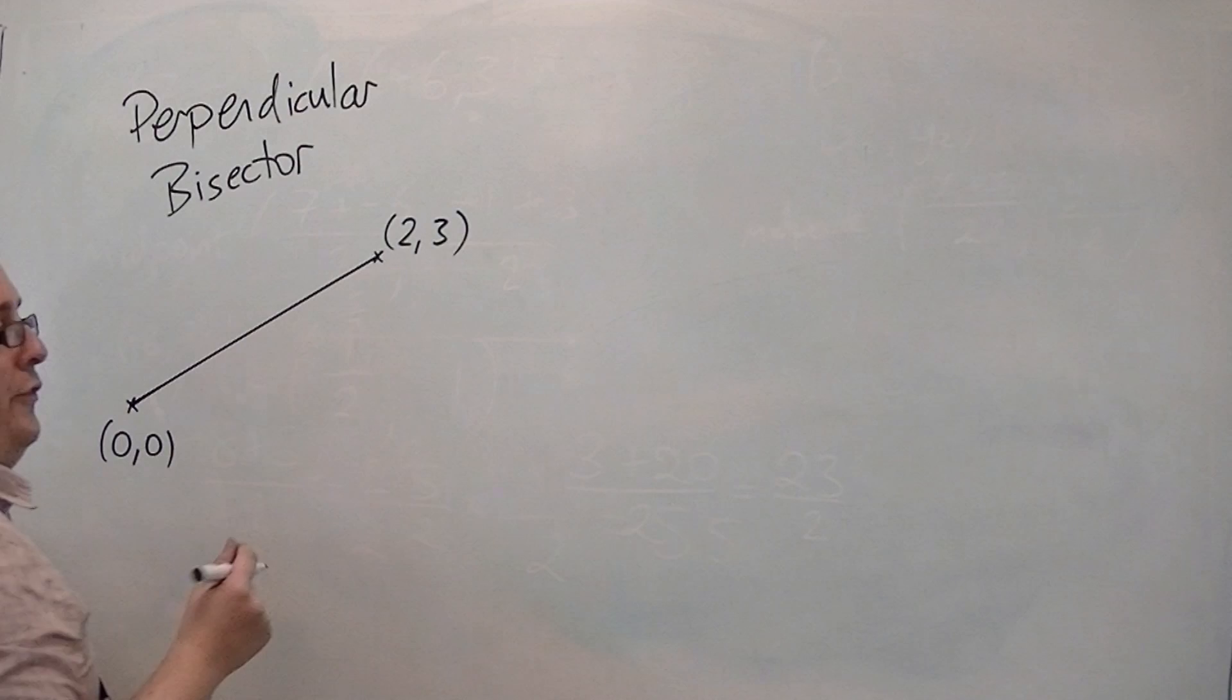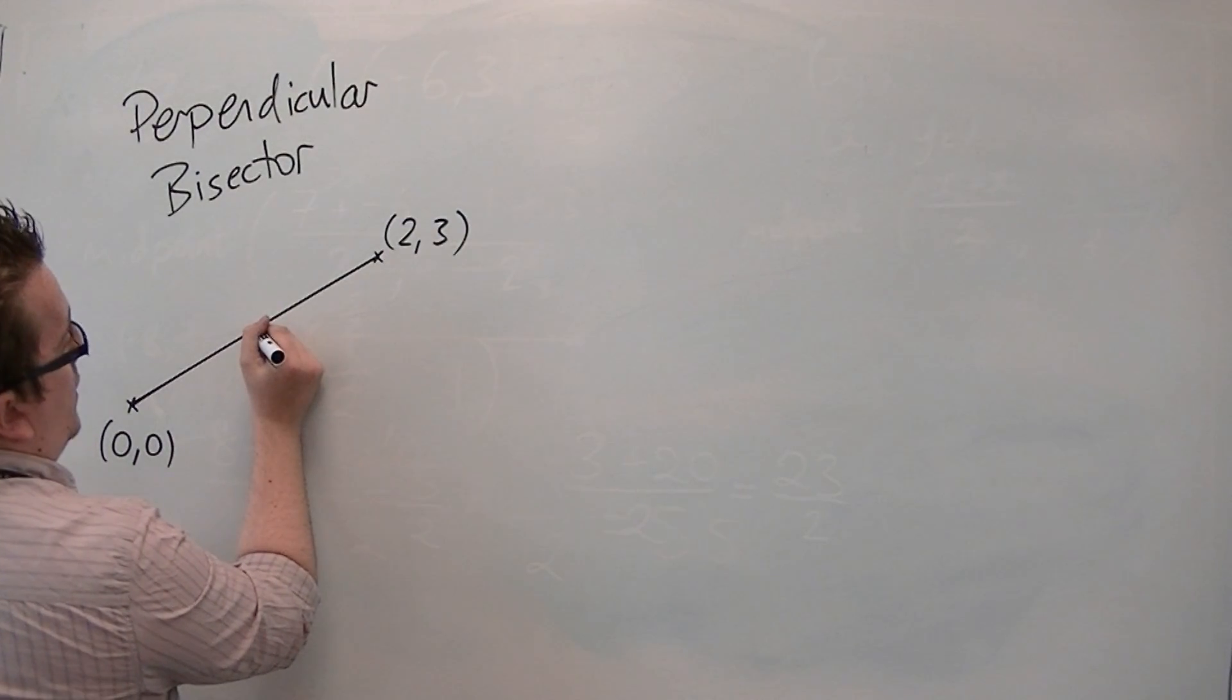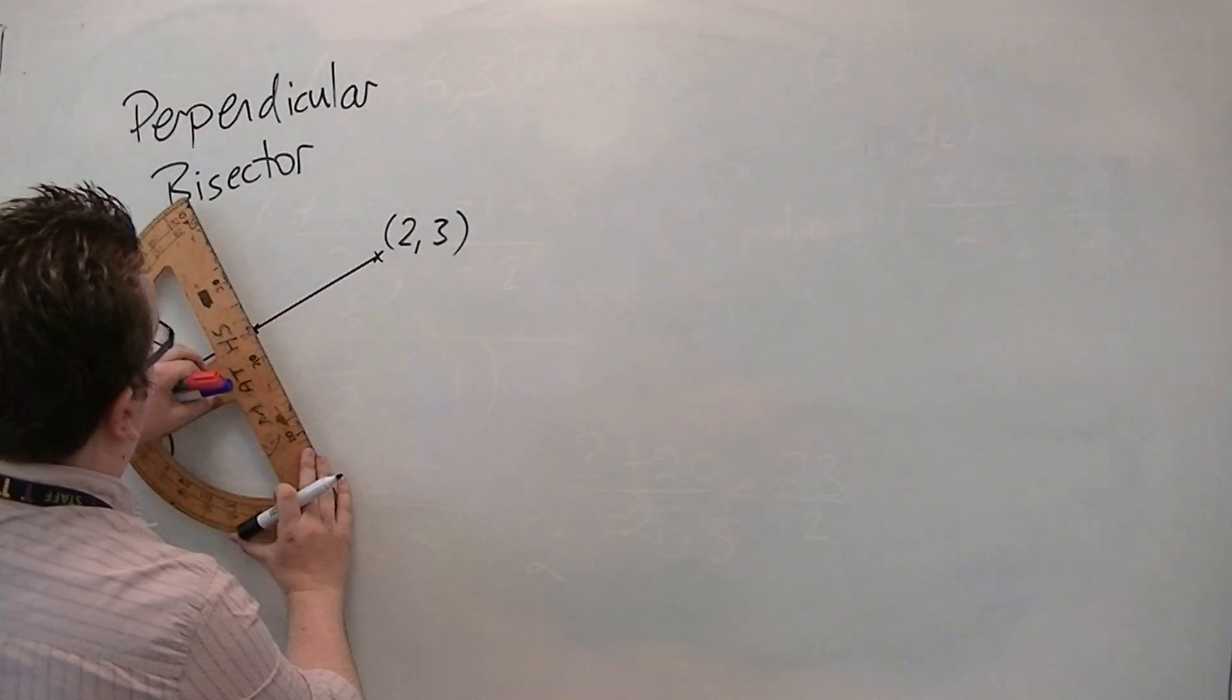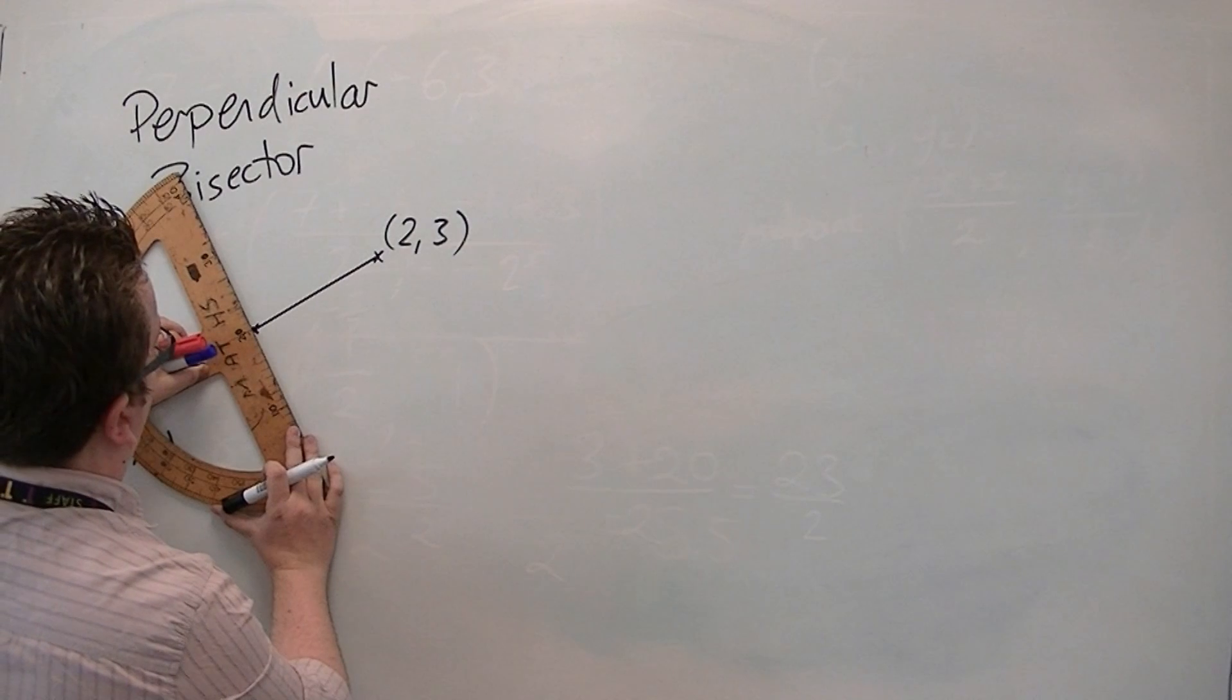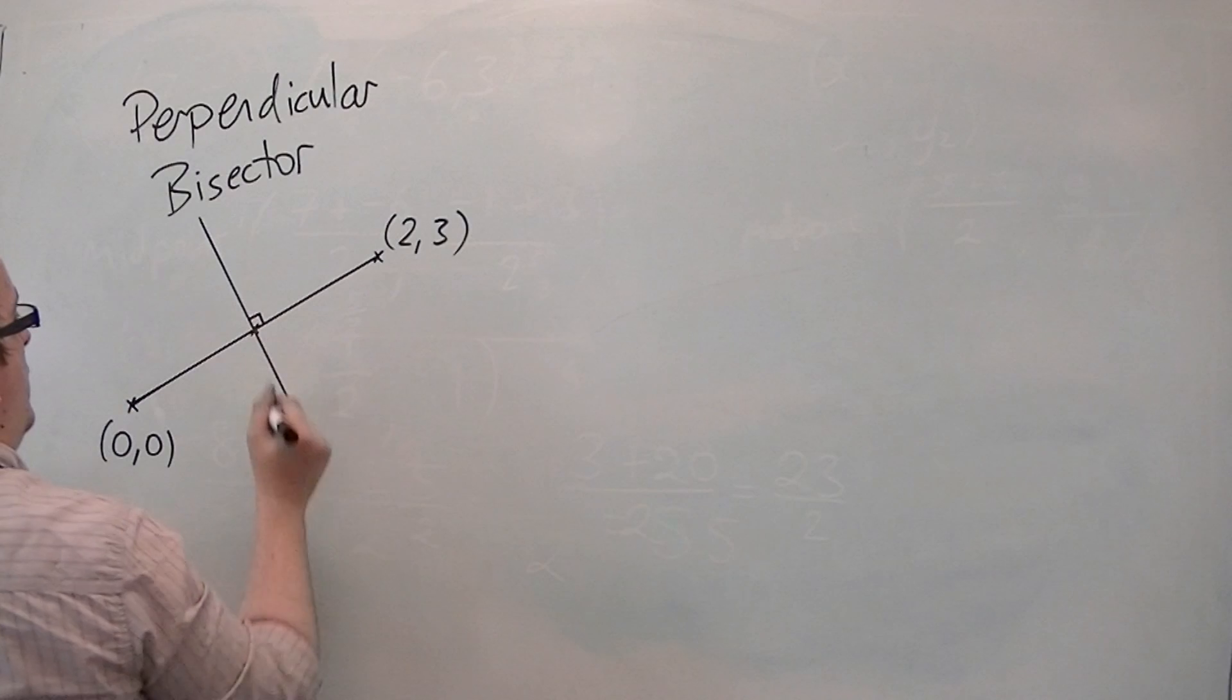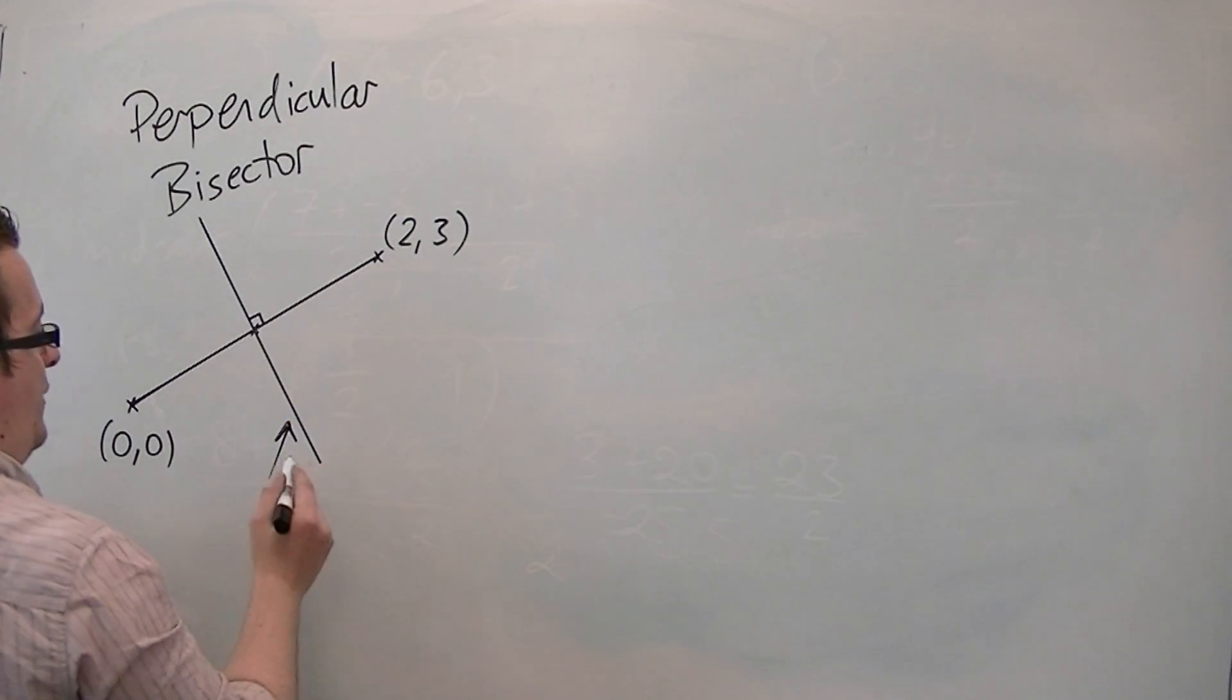I want to find the equation of the perpendicular bisector, the line that passes through the midpoint of 0, 0 and cuts the line in half at right angles. So I'm looking for the equation of this line.